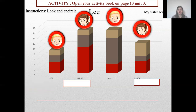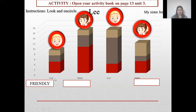This is Lee and this is Jenny, my sister. Look at the data. Friendly — Lee is friendly, Jenny is friendlier.